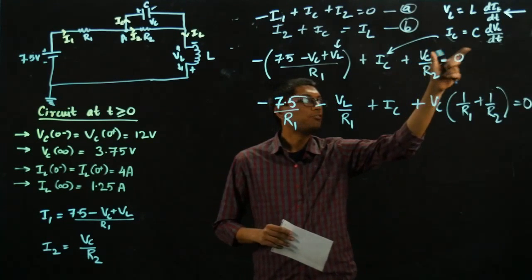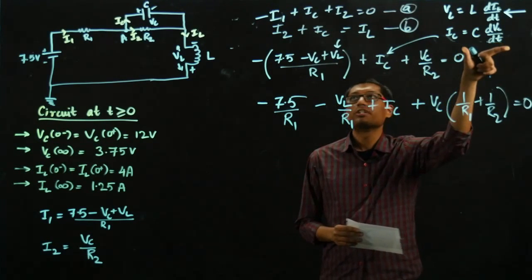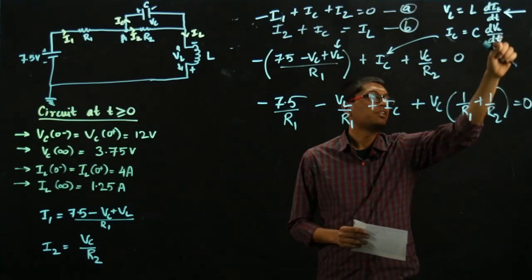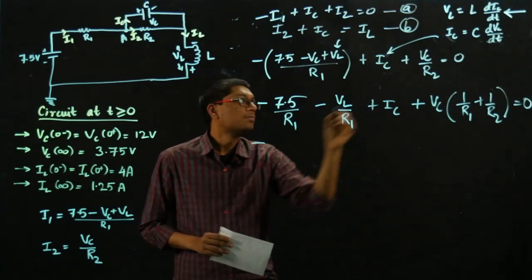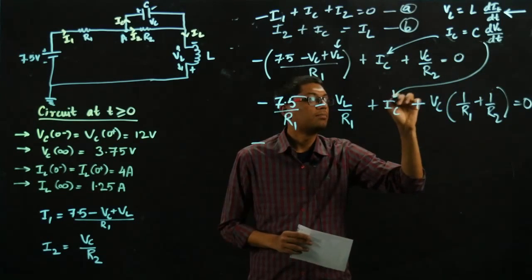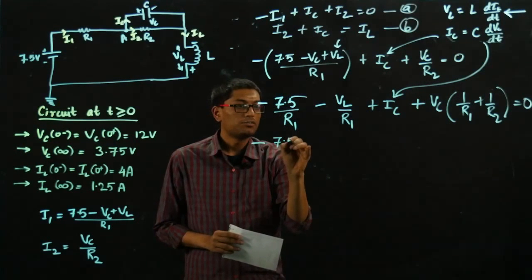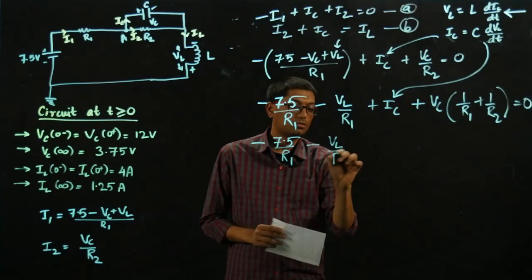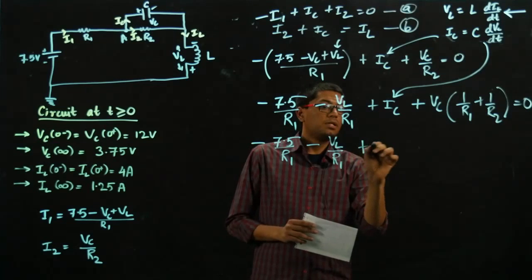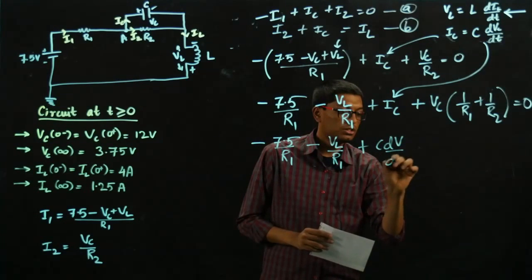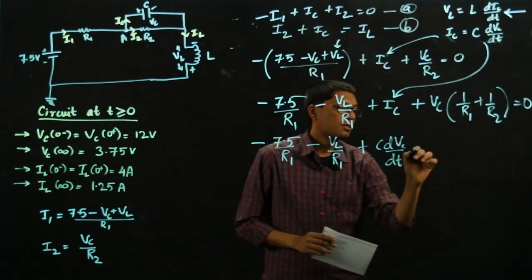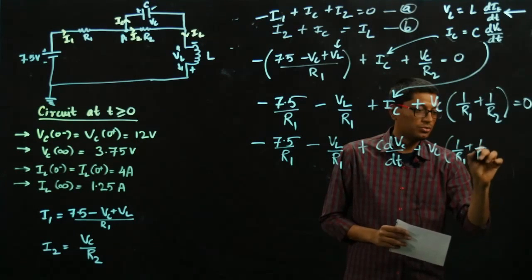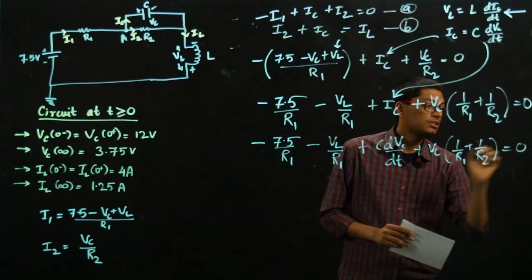Now if I use this equation, the governing equation of a capacitor, I can directly replace IC with the time derivative of VC. So I plug this here. Minus 7.5 over R1 minus VL over R1 plus C dV/dt plus VC times the sum of two reciprocals of the resistors should sum to 0.